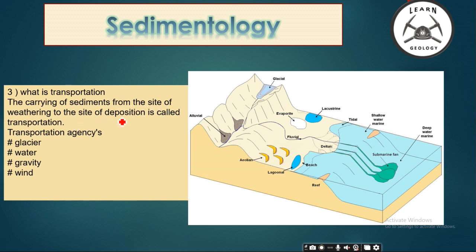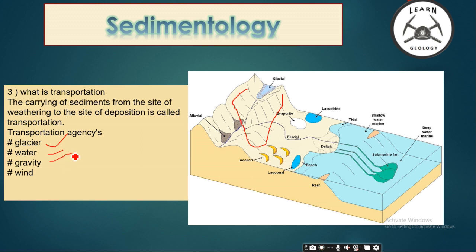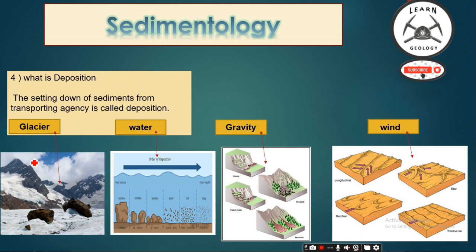The third process of sedimentary rock is transportation. The carrying of sediment from the site of weathering to the site of deposition is called transportation. The rock is weathered, converted into sediment, and then transported by different agents like glaciers, water, gravity, and wind.